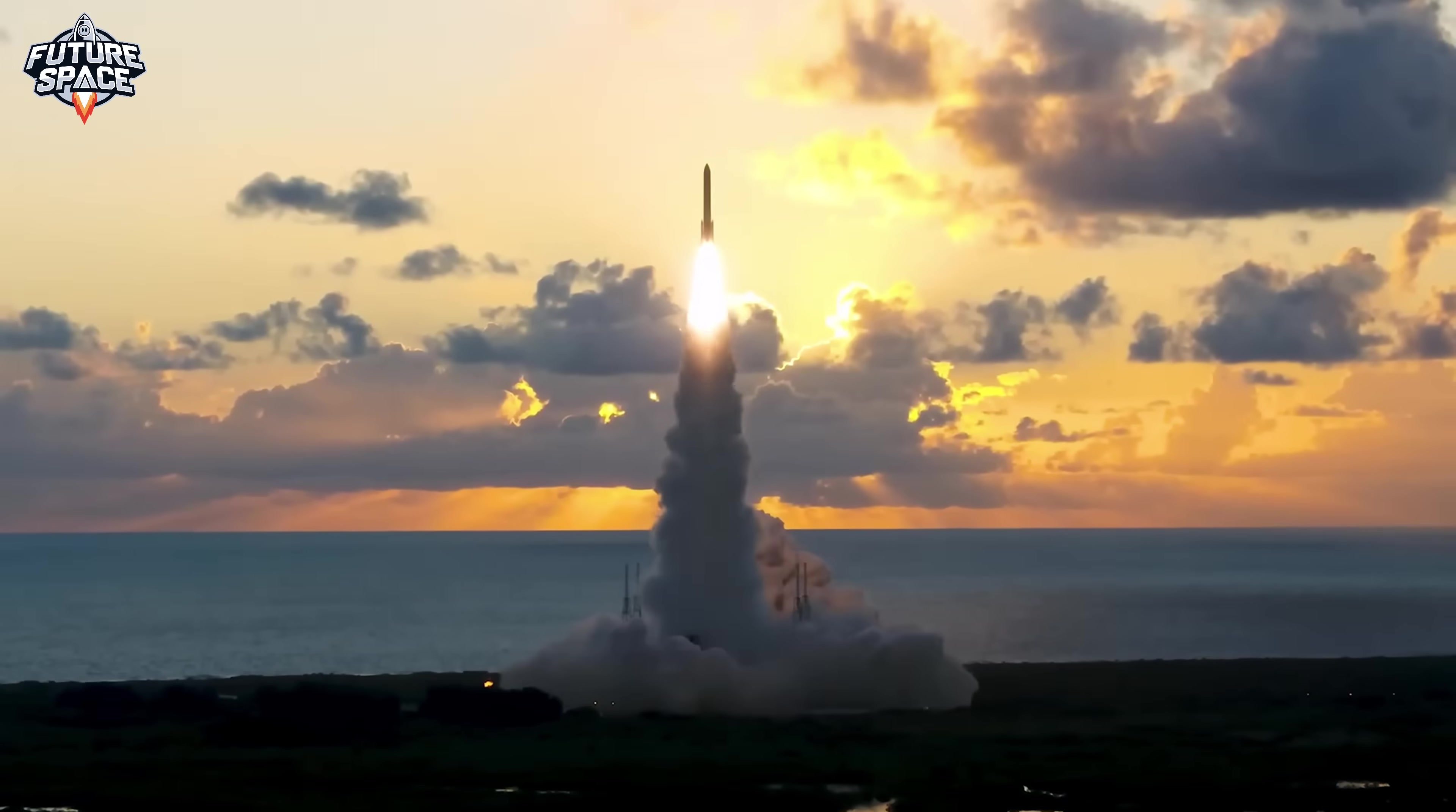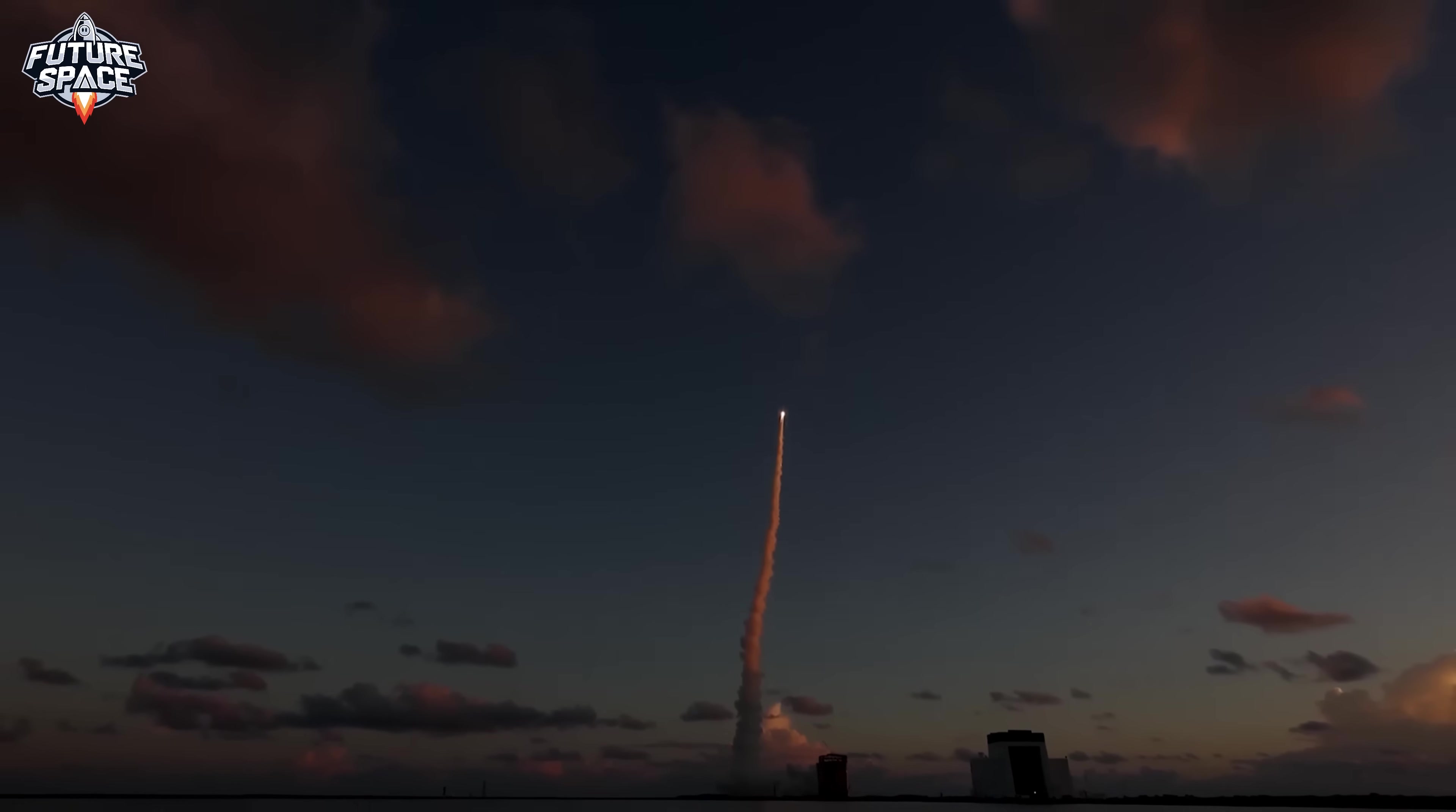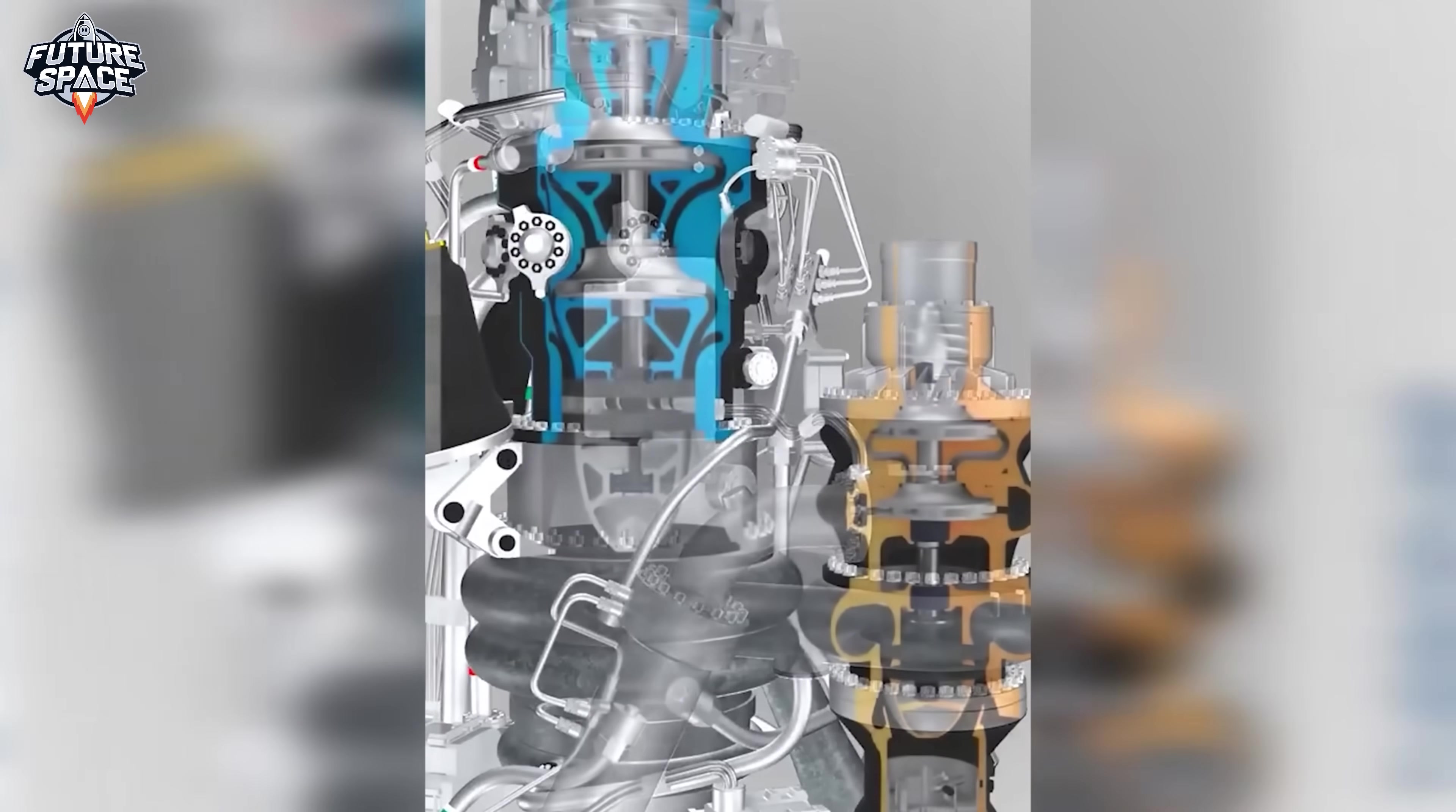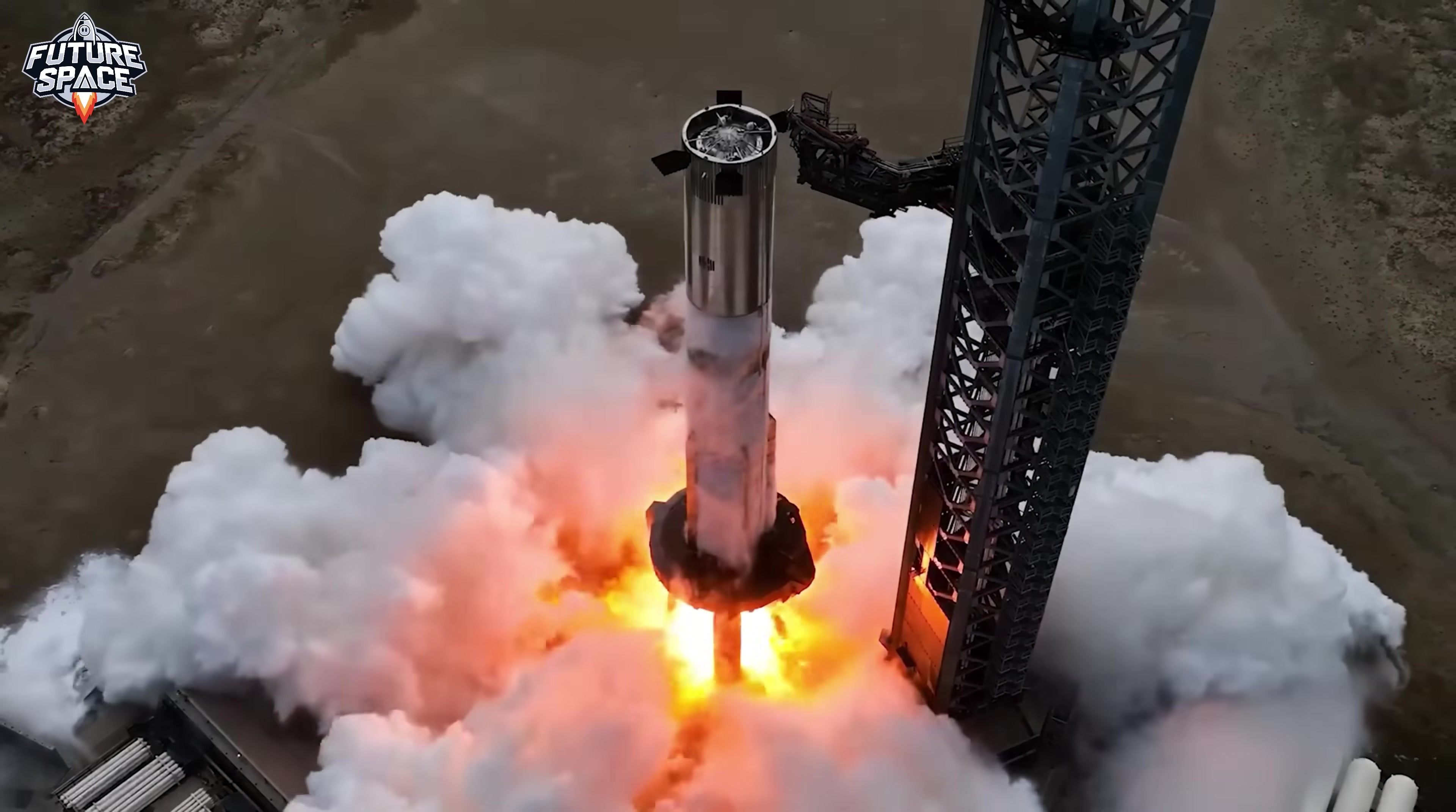When United Launch Alliance CEO Tory Bruno first saw pictures of Raptor 3, he thought SpaceX was playing a joke. The engine looked stripped and unfinished. He couldn't believe it was real. Here's why he was shocked. Traditional rocket engines have hundreds of external components. Sensors, cables, cooling lines, backup systems. Raptor 3 has almost none of them visible. SpaceX claims they integrated everything inside. But industry experts whisper a different theory. They eliminated critical safety systems to hit weight targets that were physically impossible. Remember when SpaceX chose methane fuel because it was safer than other options? That decision is now haunting them.